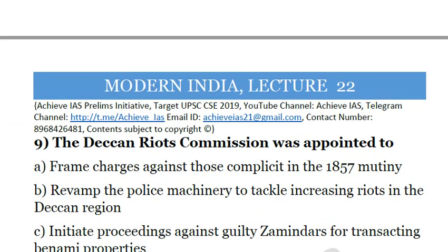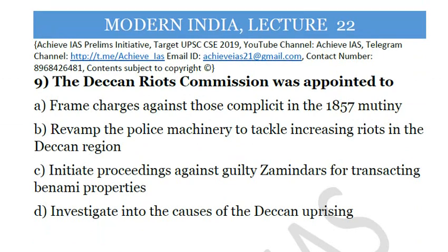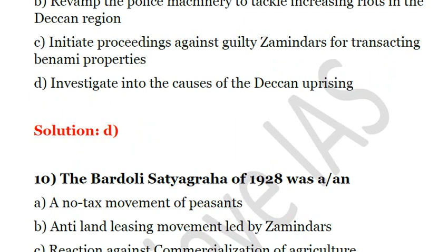Question 9: The Deccan Riots Commission was appointed to — A, frame charges against those complicit in the 1857 mutiny; B, revamp the police machinery to tackle increasing riots in the Deccan region; C, initiate proceedings against guilty zamindars for transacting benami properties; D, investigate into the causes of the Deccan uprising. The answer is D. In 1875, there were Deccan riots targeted against the moneylenders of Maharashtra and Gujarat. Peasants socially boycotted these moneylenders, and the movement later turned into a full-fledged uprising. The Deccan Riots Commission was appointed to investigate its causes.